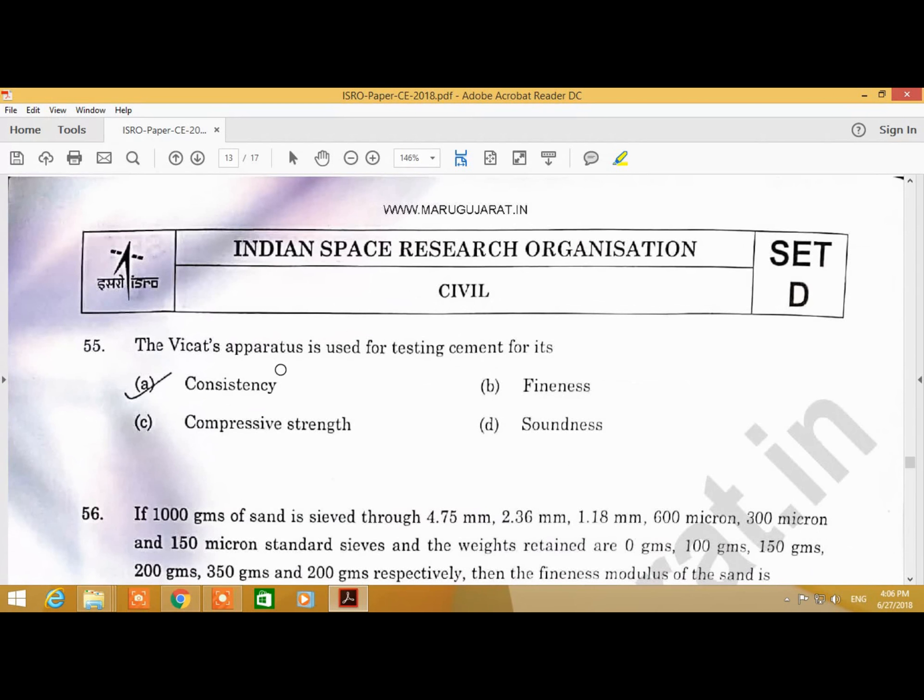Question Number 55: The Vicat apparatus is used for testing cement for its. Answer is A, consistency.